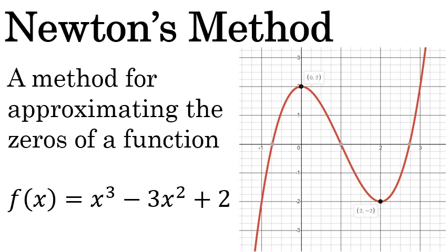Graphically, the zeros of a function are the places where the graph crosses the x-axis. This function has one, two, three zeros.